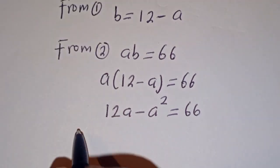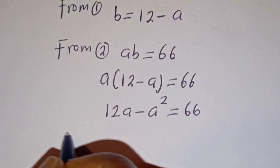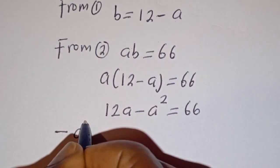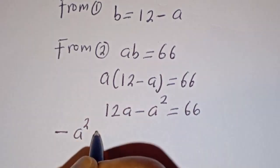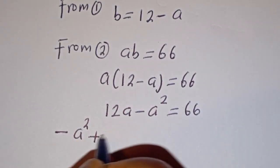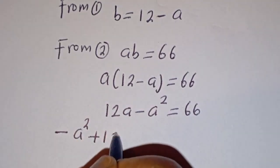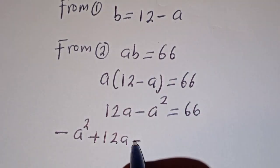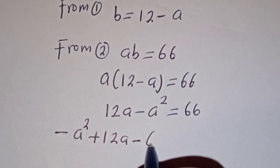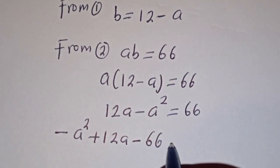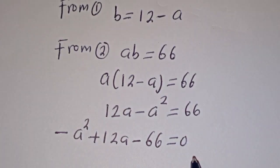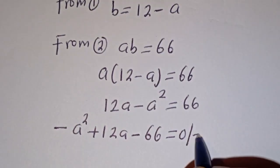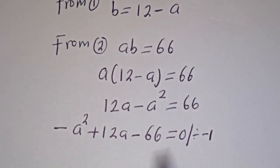Then let's rearrange this. We have minus A squared plus 12A minus 66 is equal to 0. We can divide all terms by minus 1.